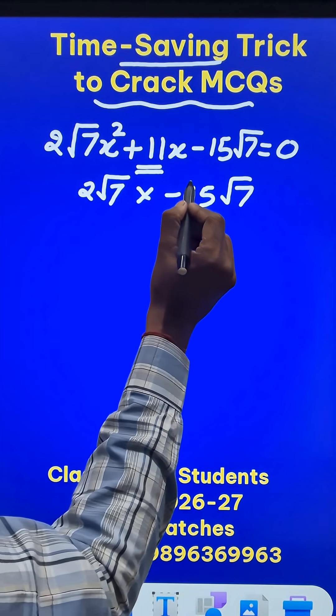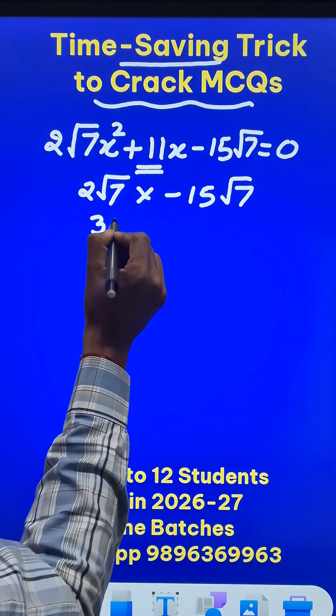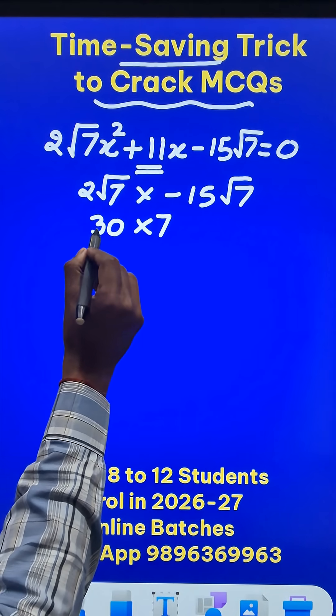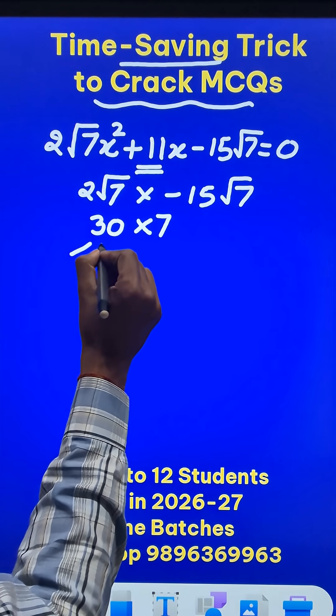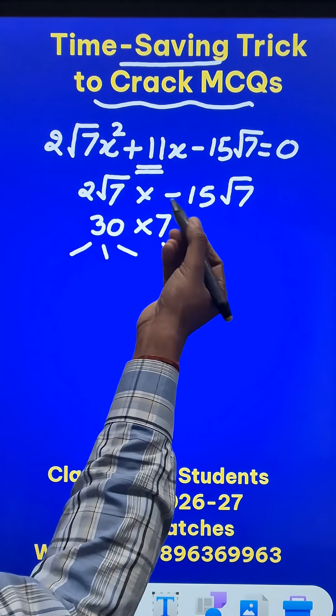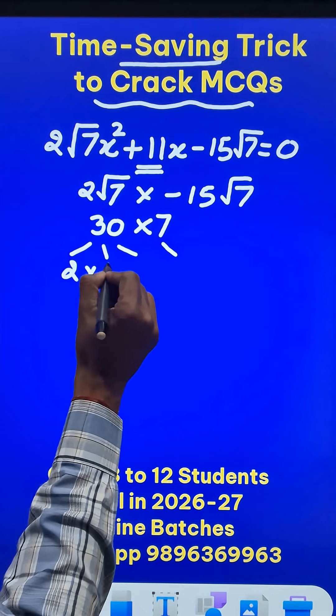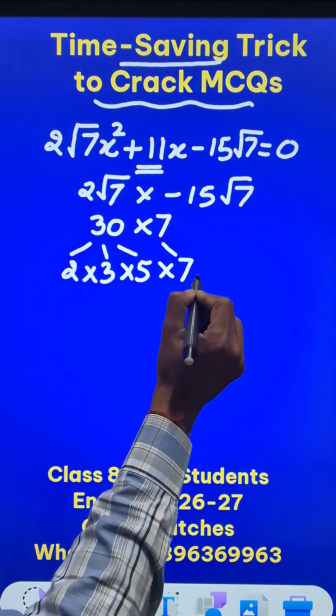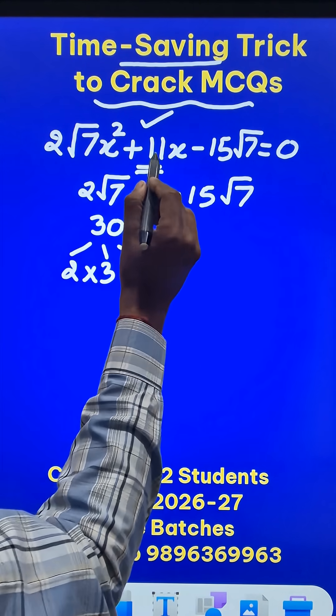Now this becomes 2 times 15 times is 30, and √7 into √7 obviously is 7. So I can split this 30 into smaller factors and 7 obviously is a prime number. So 30 is 2×3×5 and we have a 7 here. Now let's convert them to two factors whose sum or difference is 11.